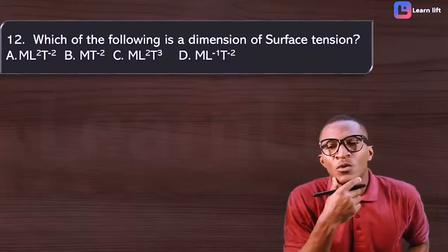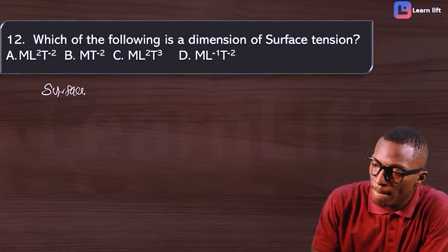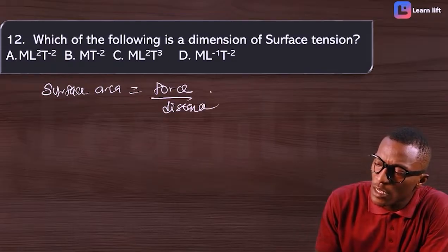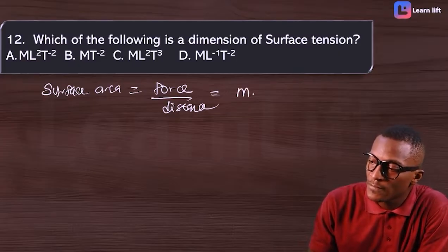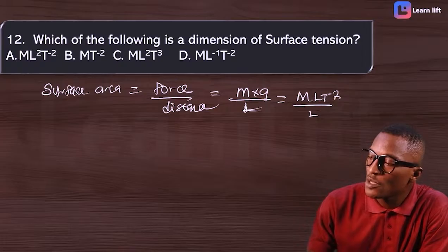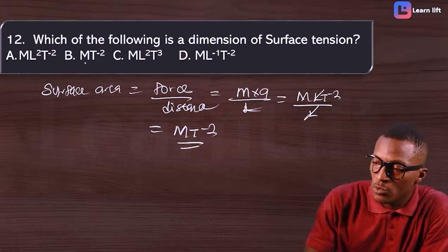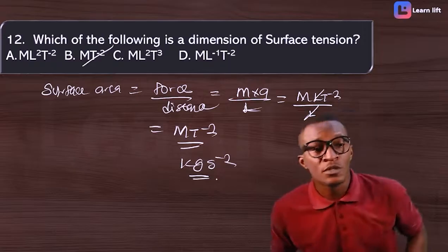What is the dimension for surface tension? Surface tension is force over distance. Force gives mass times acceleration, distance is L. In dimension: MLT⁻² ÷ L = MT⁻². In units: kilogram × second⁻², giving dimension MT⁻².